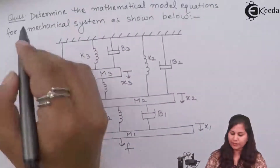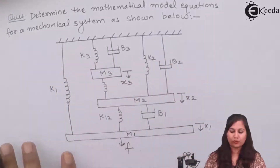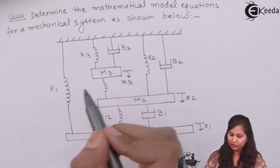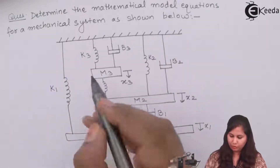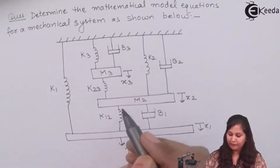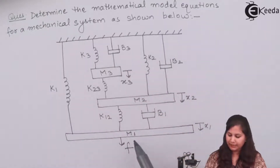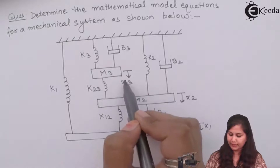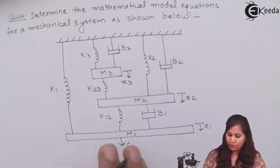Our problem is to determine the mathematical model equations for a mechanical system. The system has a rigid surface through which springs k1, k2, and k3 are connected. There are springs k23 between m3 and m2, and k12 between m2 and m1. We also have three dampers b1, b2, b3, three mass elements m1, m2, m3, three displacements x1, x2, x3, and an external force f acting on the system.